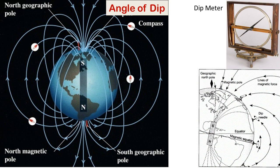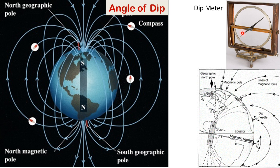The angle of dip gives us the direction of the earth's magnetic field. The earth is like a large magnet and it has magnetic field lines around it. The angle of dip at a location gives us the direction of the earth's magnetic field. A dip meter is a vertically mounted compass, and when it is placed at various locations on earth it makes an angle with the vertical, and this angle is known as the angle of dip.